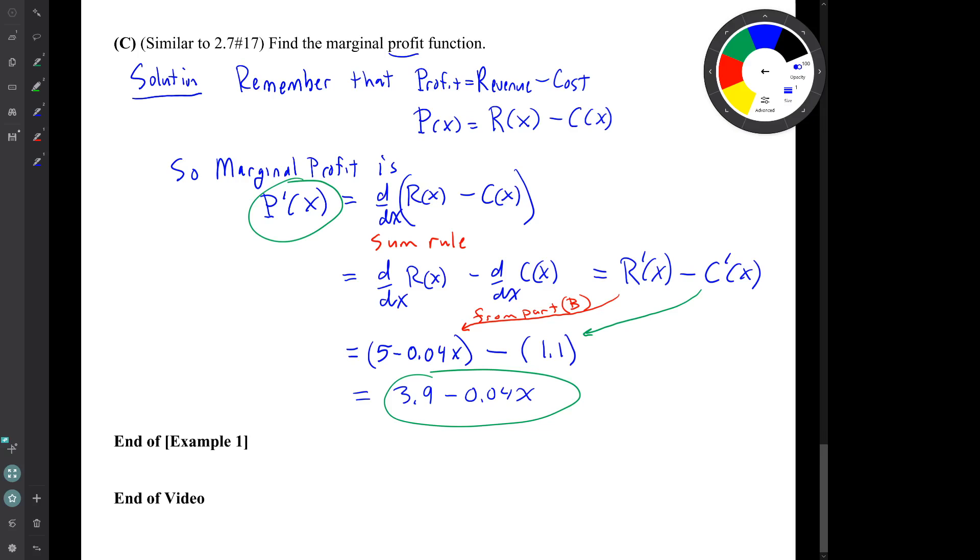So that's the end of our example. You see that this video, there wasn't really much new. Just those new terms, revenue and profit. And the idea of marginal quantities, which just means the derivative of a quantity. So that's the end of the video. Thank you.